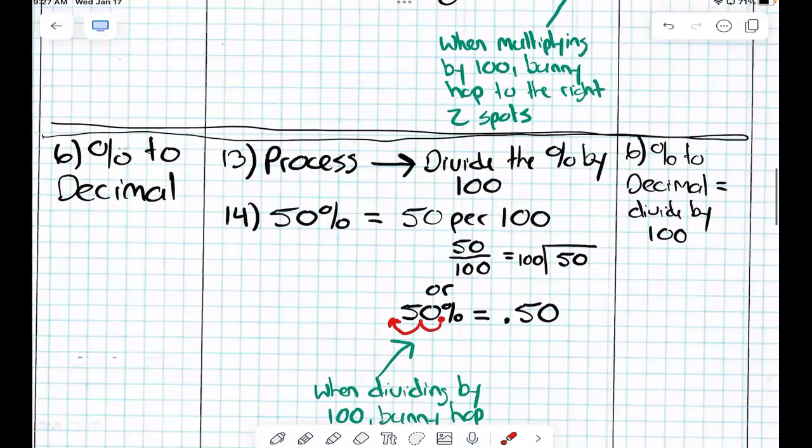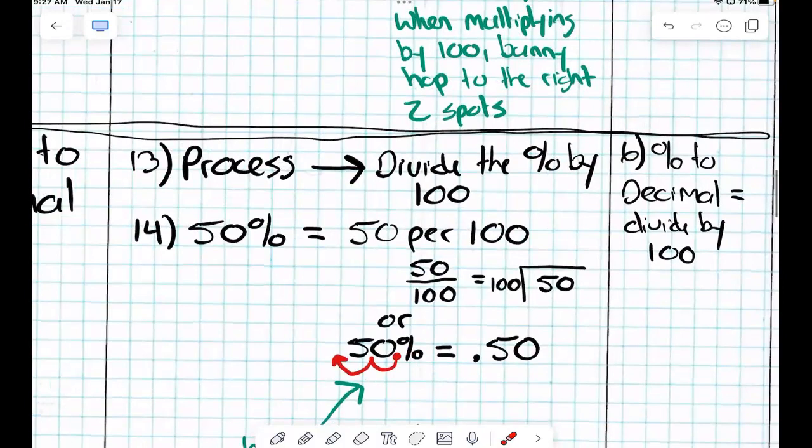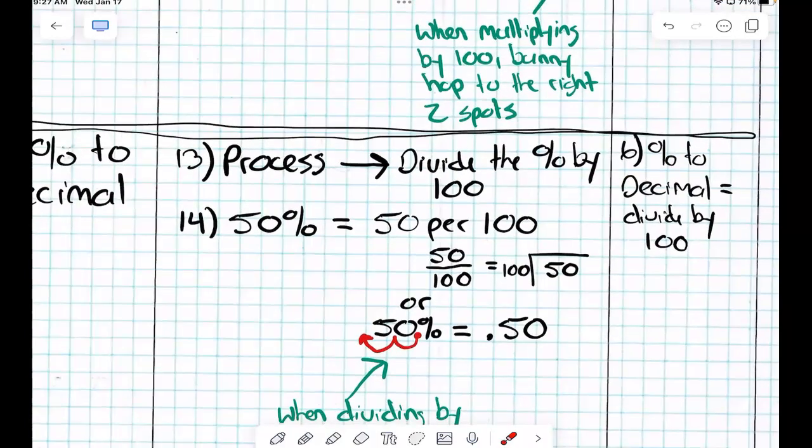Next one. Percent to decimal. Percent to decimal. What's the process in the count of three? One, two, three. Divide the percent by 100, which is really just two bunny hops to the left.